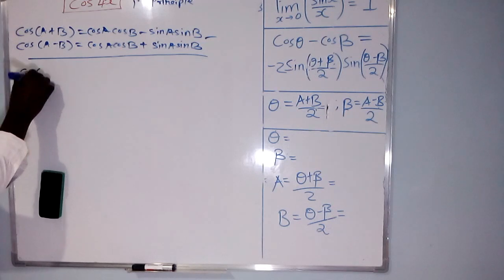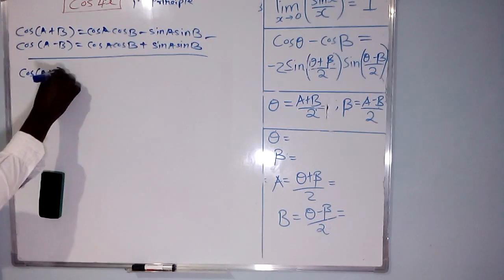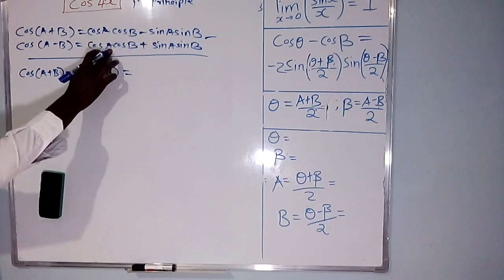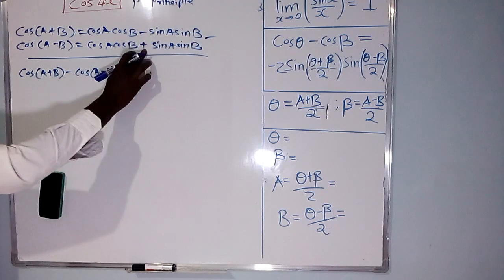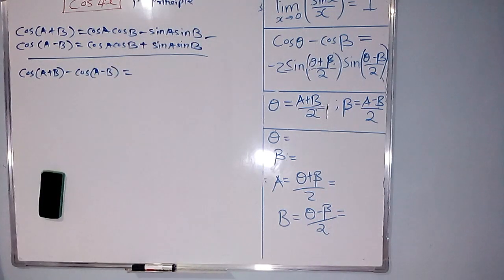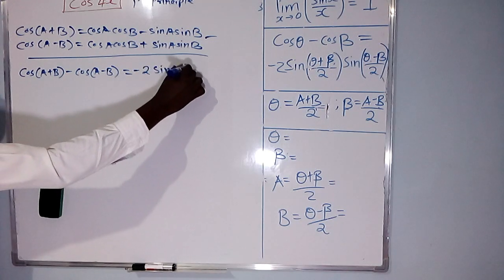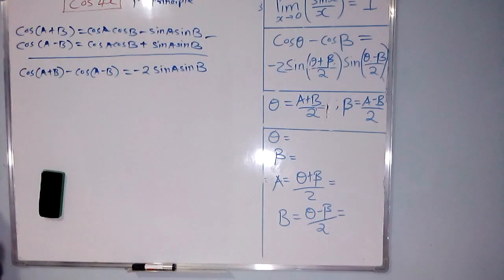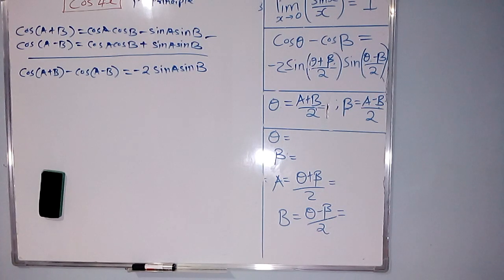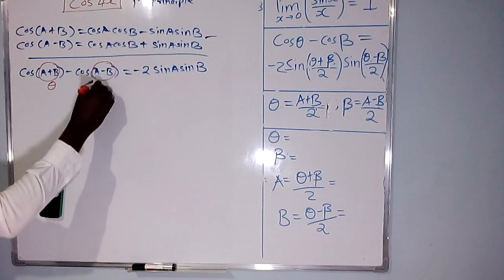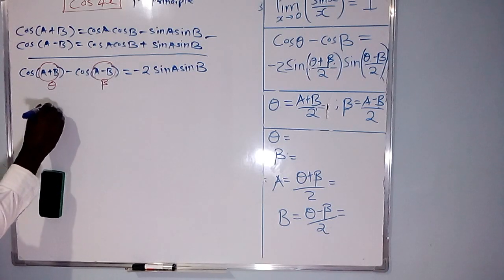So if you subtract the two equations, on the left side you have cos(A+B) minus cos(A-B). On the right side, the cos A cos B terms cancel to zero, and you are left with minus 2 sin A sin B. So where there is A+B we put theta, and where there is A-B we put beta. We now need to find the value of A.